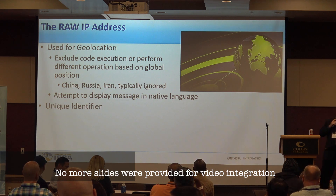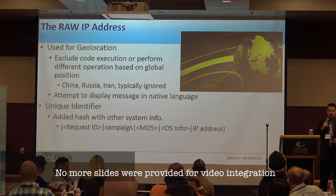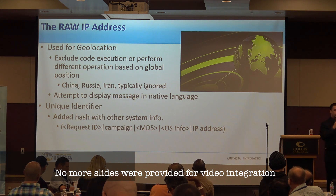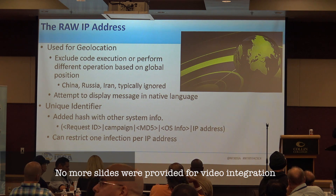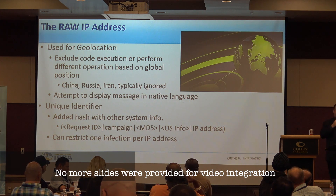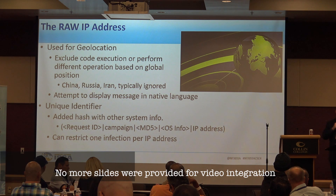The geolocation callback also sends back a unique identifier telling the bad actors about the system — which campaign, a hash of the machine, information about the OS, and the IP address. This ensures the system is not infected more than once, because they are aware that analysts are actively fighting ransomware. They'll restrict the infection so the same IP can't be compromised more than once. These variants can also detect if a system is a virtual machine and may not encrypt it — they're trying to thwart researchers.